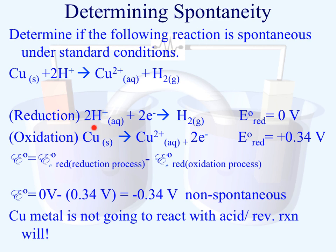The reduction process gives us a standard reduction potential of zero from our chart. For the oxidation process, we go to the standard reduction potential chart and find that it is 0.34 volts. We take those values and plug them into the appropriate reduction and oxidation processes per the equation from the previous slide. After doing the math, we end up with a cell potential of negative 0.34 volts.